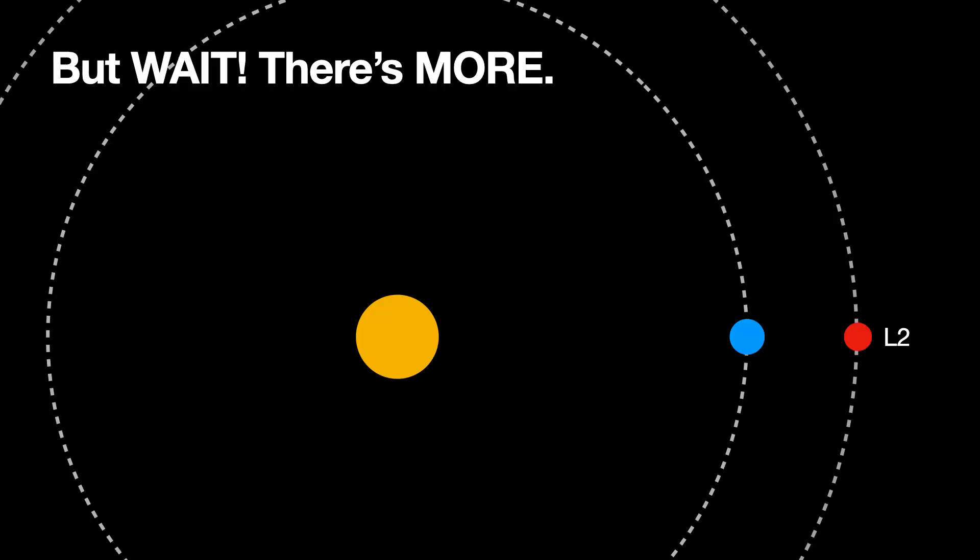So here is the L2 Lagrange point. There's another one over here, L1. L1 also moves with the same angular velocity as the Earth, but at a smaller radius. In this case, the Sun pulls one way and the Earth pulls the other way to make the angular velocity the same. But wait! There's another one.